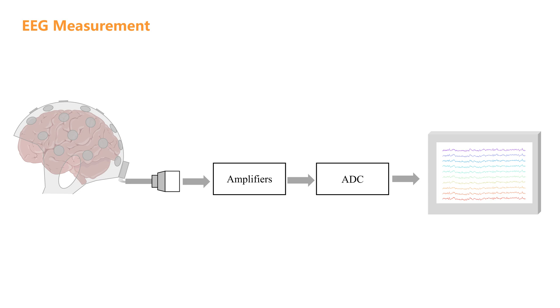The entire process is like cooking. Electrodes are the ingredient detectors, amplifiers are the flavor enhancers, and the ADC is the key tool that packages the final product.